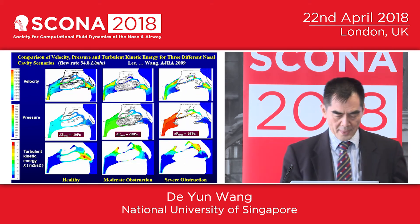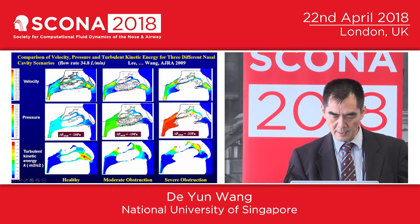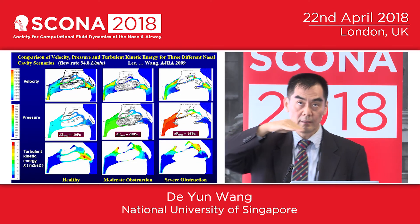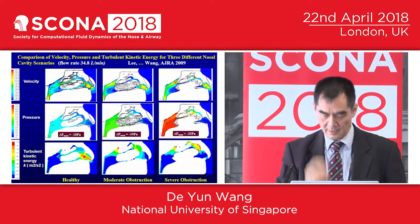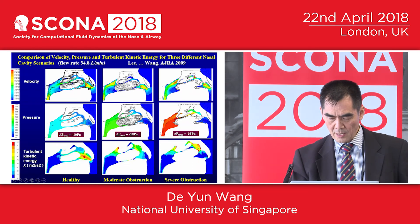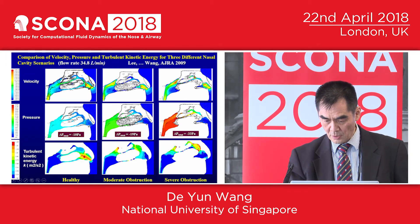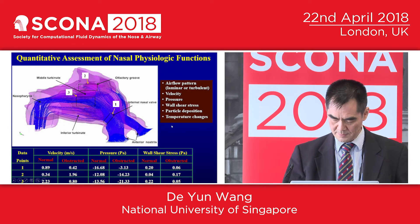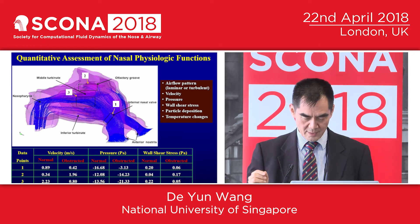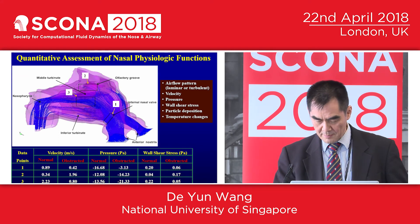Looking at the healthy nose, velocity, pressure, and turbulence show that most airflow travels through the middle stream — between the inferior turbinate, upper part of the inferior turbinate, middle turbinate, and the septum. Once nasal obstruction is present, more air is redirected to the upper part of the nose. Regarding pressure, we know the nasal airway has some negative pressure, but with severe nasal obstruction the pressure doubles or even triples. We were very pleased because through this model we can visualize velocity, pressure, wall shear stress, and other parameters anywhere in the nasal cavity, helping us better understand the physiology.